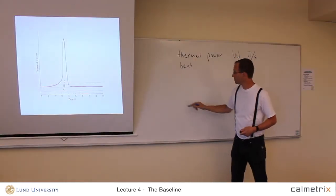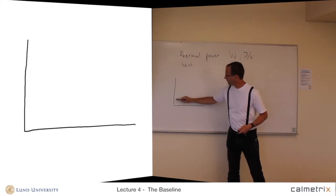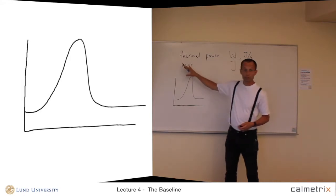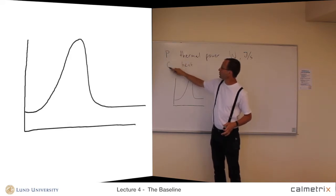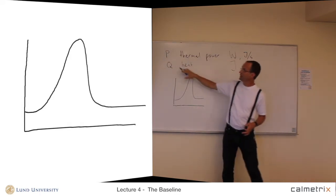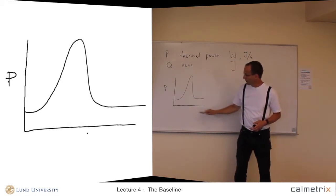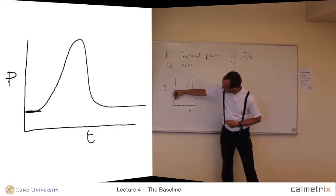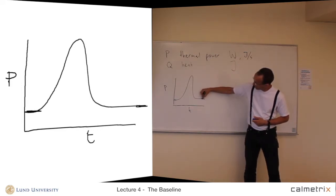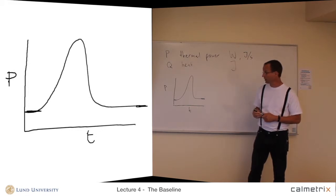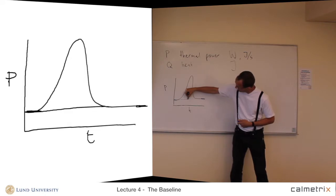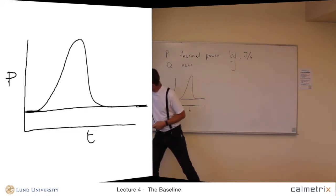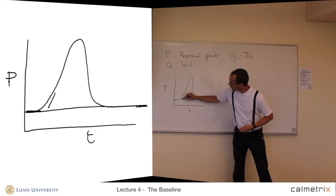Now I will draw the same curve here on the board. We add some nomenclature: P and Q. Thermal power is P, and heat is Q. So what we measure here is P, and the horizontal axis is time. The first part here is a baseline, and the last part, when the reaction has finished, is also a baseline. The curve itself is not perfectly horizontal in my drawing, but in a real case it actually is.